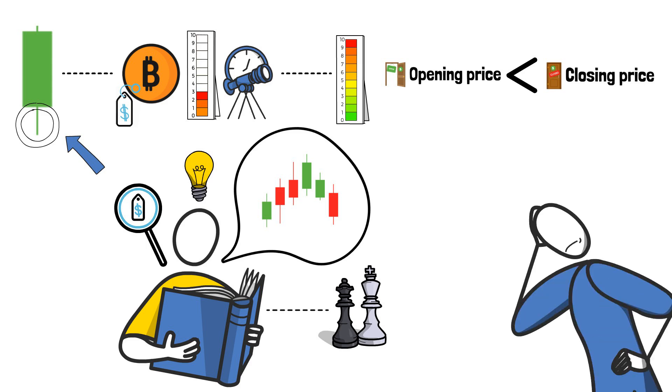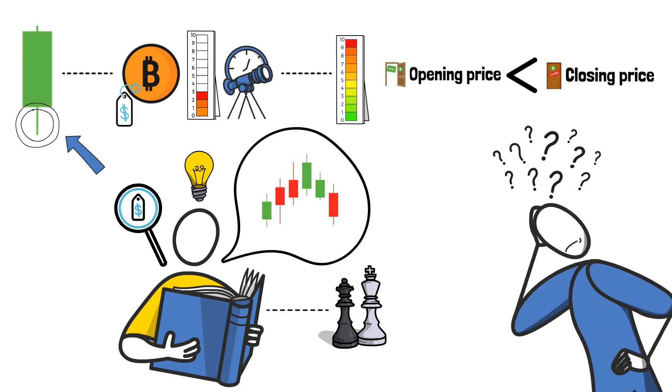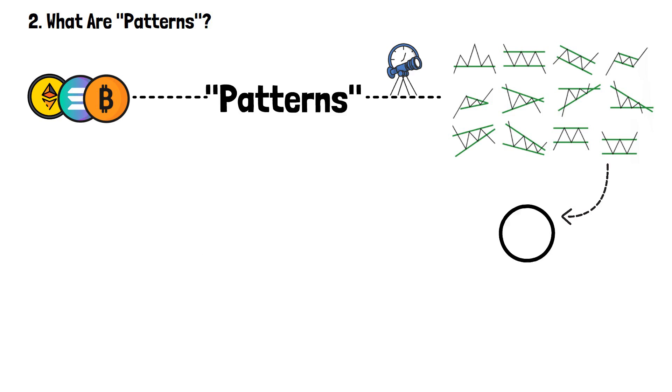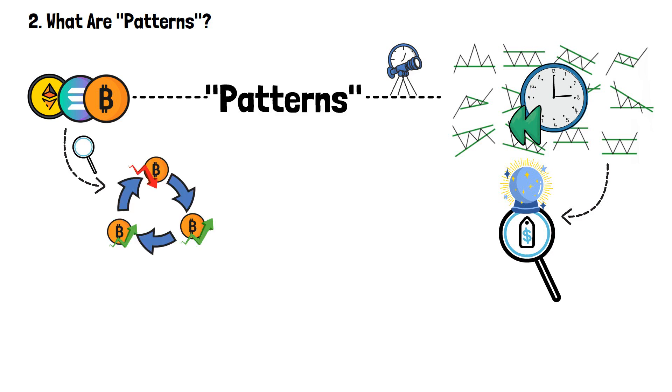But what are patterns, actually, and how to recognize them? In the context of crypto, patterns refer to specific shapes within a price chart that are recurring from time to time. They suggest what the prices may look in the near future, based on how they've looked in the past. It's the crypto version of noticing repetitive, cyclical patterns of behavior.